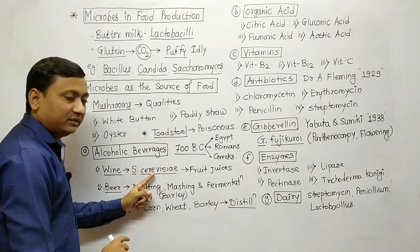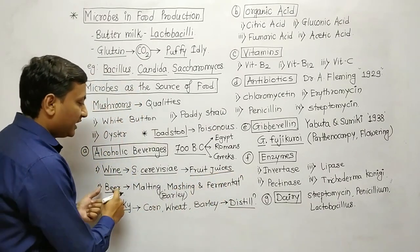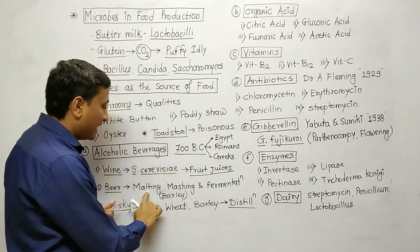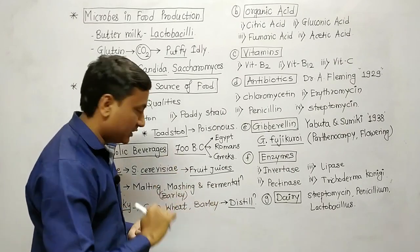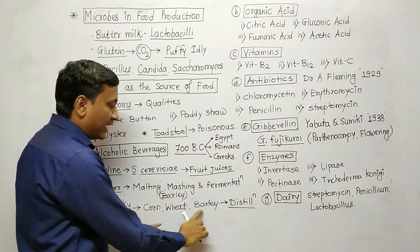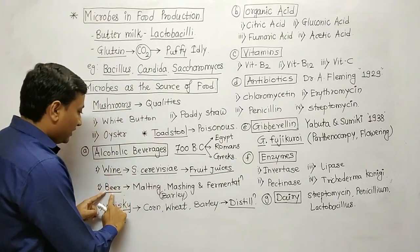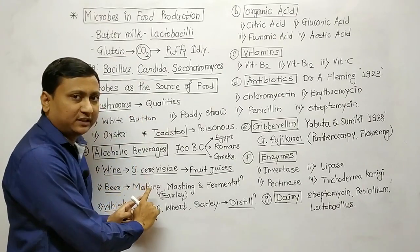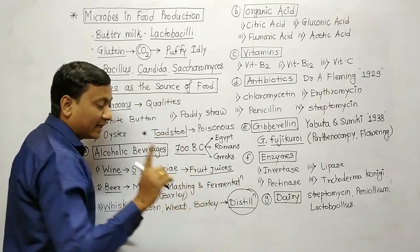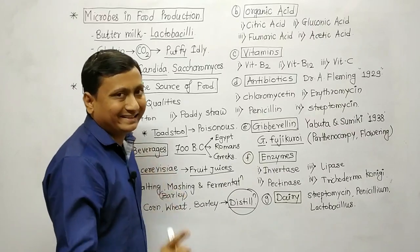Wine is produced from fruit juices. Beer is generally fermented barley, produced through three basic steps: malting, mashing, and fermentation. Whiskey is fermented from corn, wheat, and barley. An important point: wine and beer are produced without distillation, but whiskey is produced with distillation.